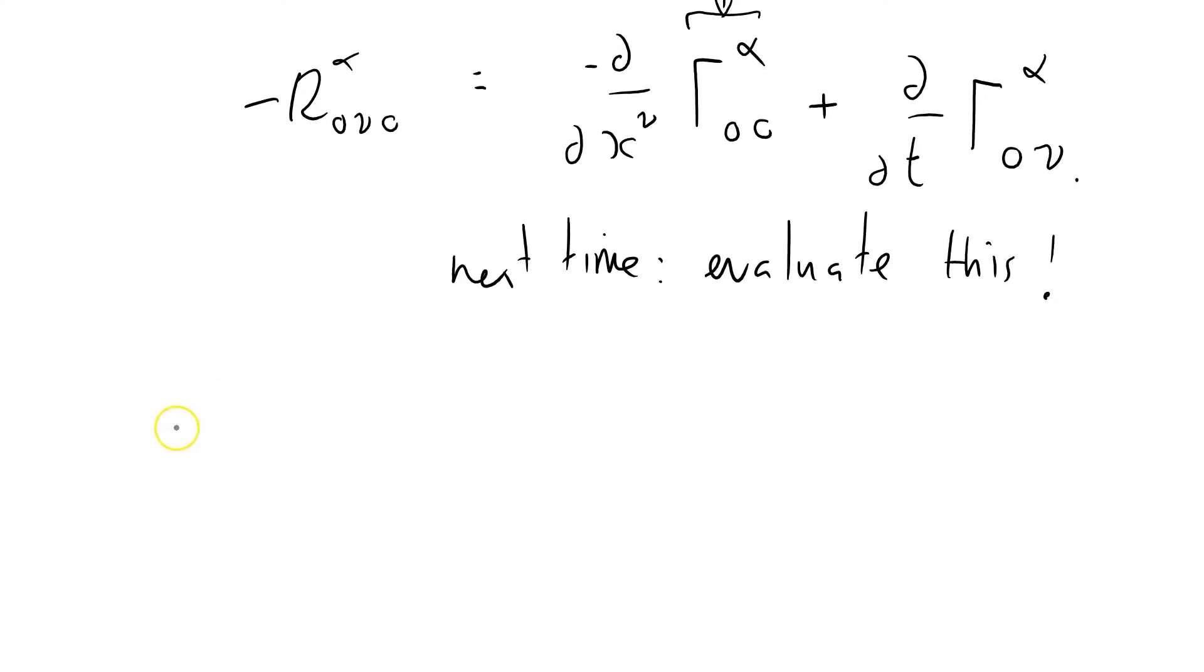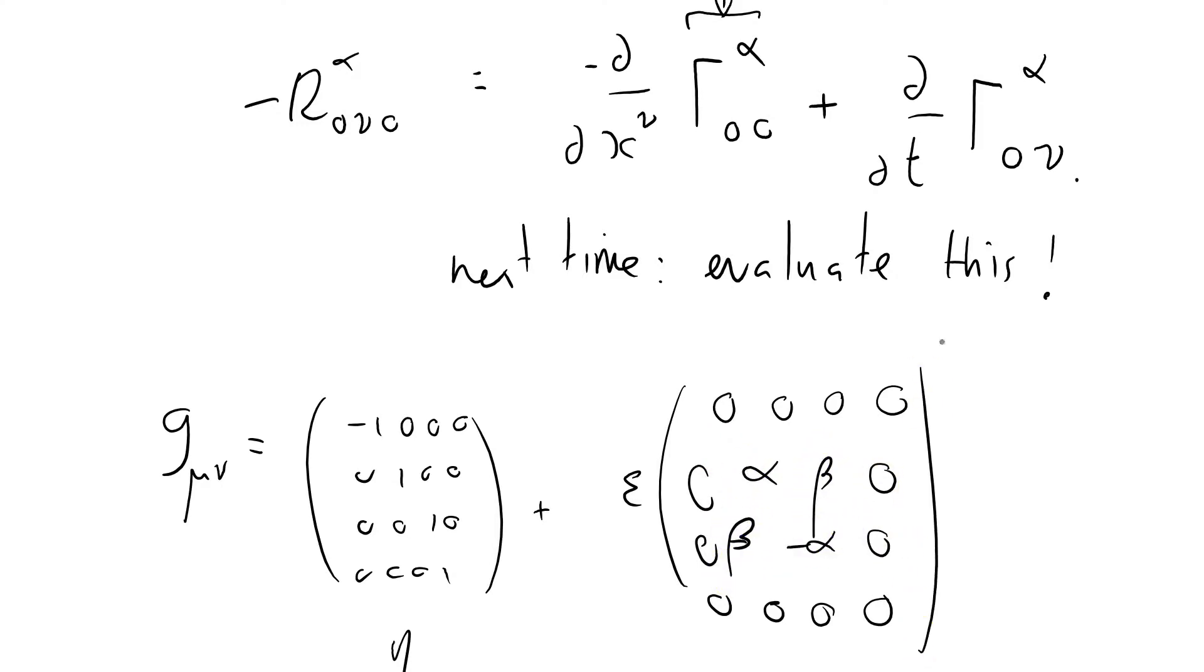Okay, so what have we got? We've got our metric tensor g_μν equal to eta (which is minus one, zero, zero, zero, zero, one, zero, zero, zero, zero, one, zero, zero, zero, zero, one) plus something small epsilon times this A matrix alpha, beta e to the i times minus omega t plus omega z.